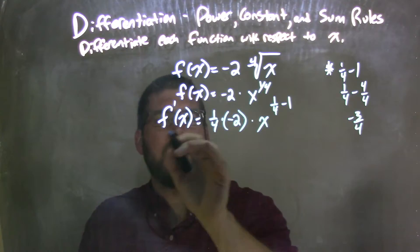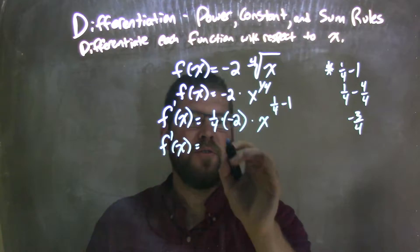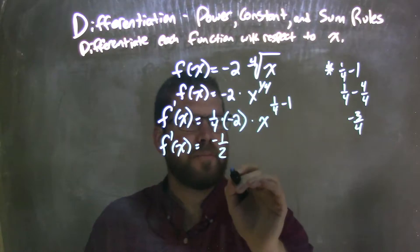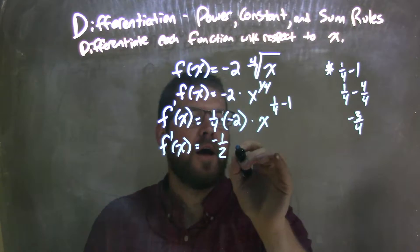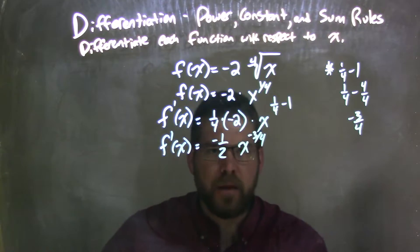Moving on, so now when I simplify this, f prime of x, one-fourth times a negative 2 is the same thing as a negative one-half, times x to the power here, negative three-fourths power.